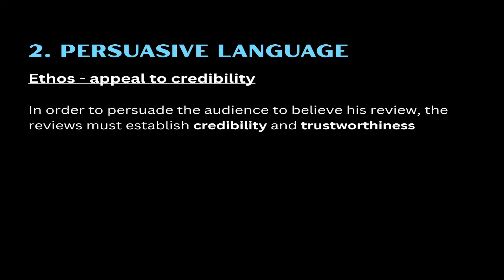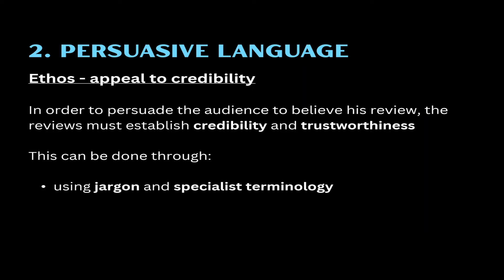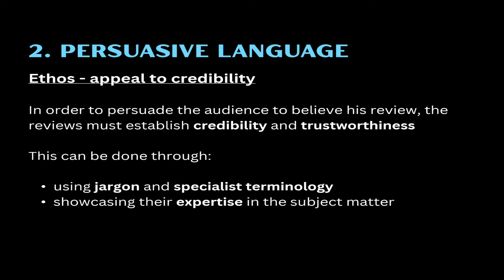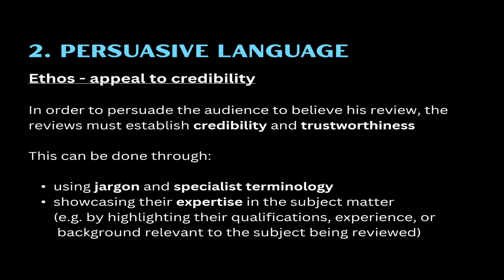Ethos is the appeal to credibility. Ethos essentially means that you, as the reviewer, need to establish yourself as a trustworthy person who is knowledgeable about the subject you're discussing. To be persuaded by your words, the audience first needs to trust you. One of the ways to build trust is through the use of jargon and specialist terminology — if you're able to use words specific to the film industry in your film review, your audience will perceive you as someone who knows what they're talking about. You should also showcase your expertise by highlighting your qualifications, experience, or background relevant to the subject being reviewed. This is also a useful point to consider when analyzing reviews in the reading paper — look for examples of the way the author positions himself as an expert in the field as examples of establishing ethos.